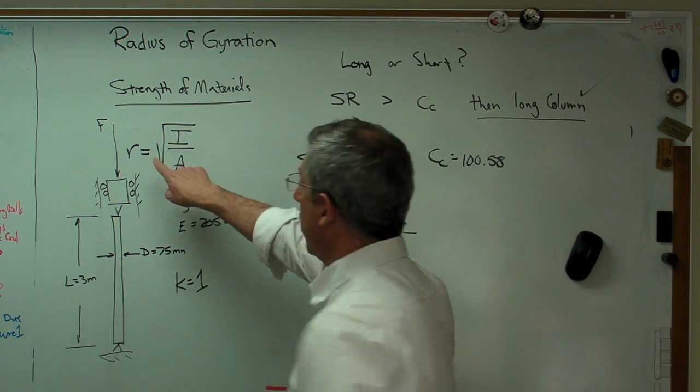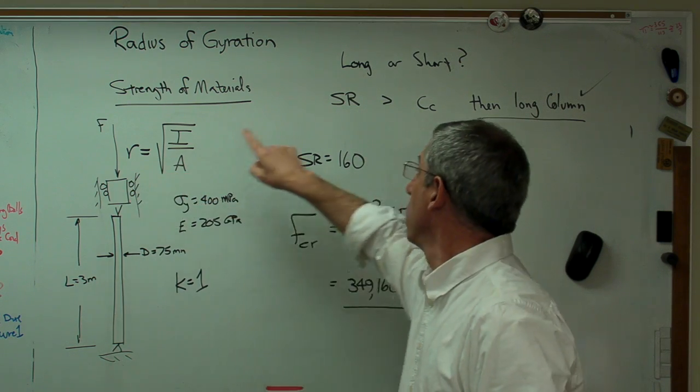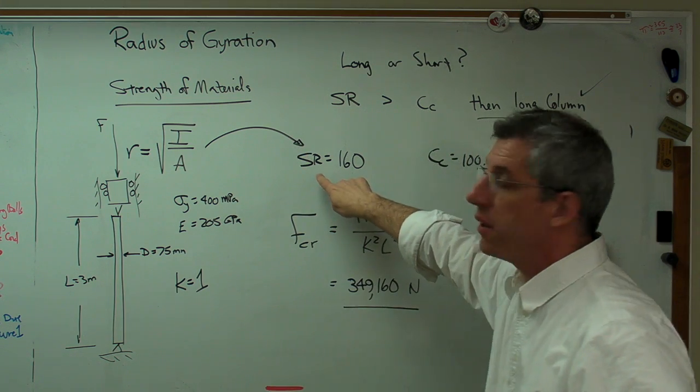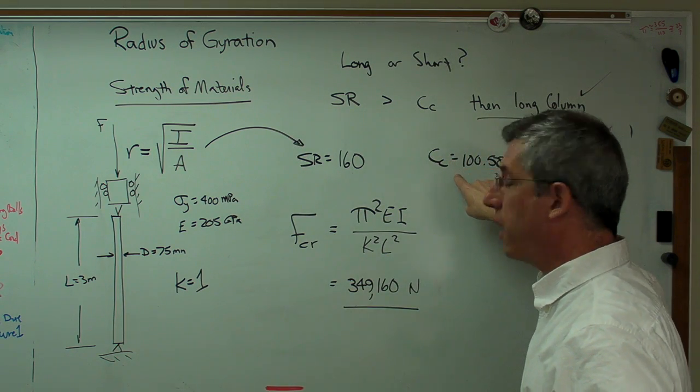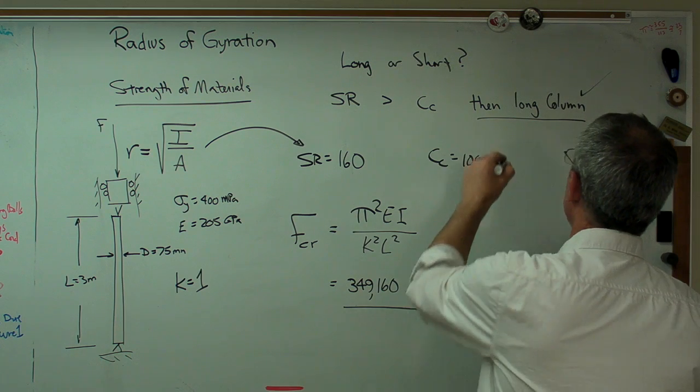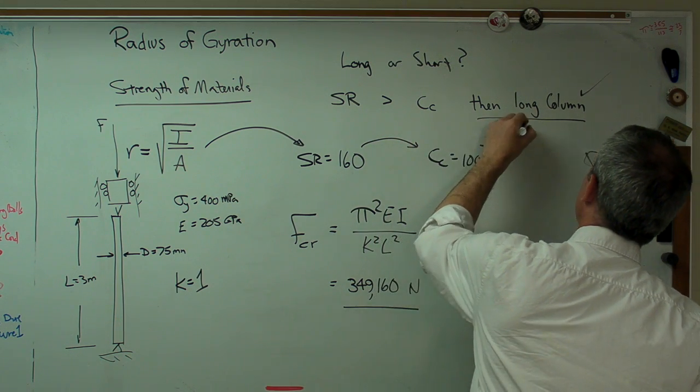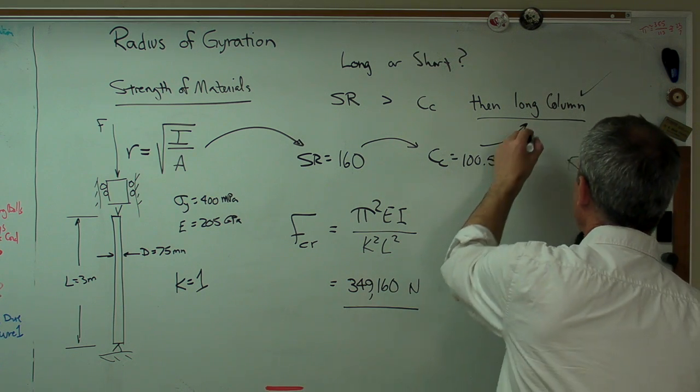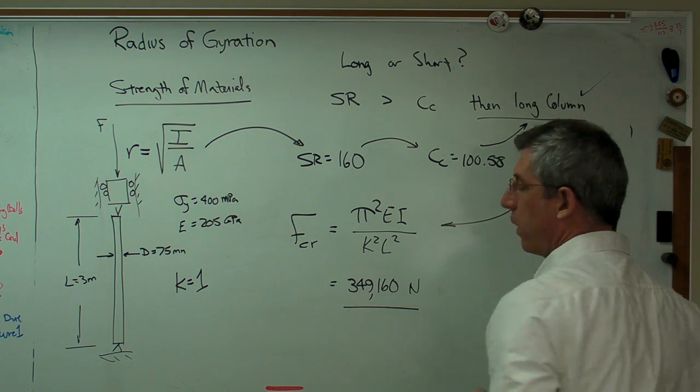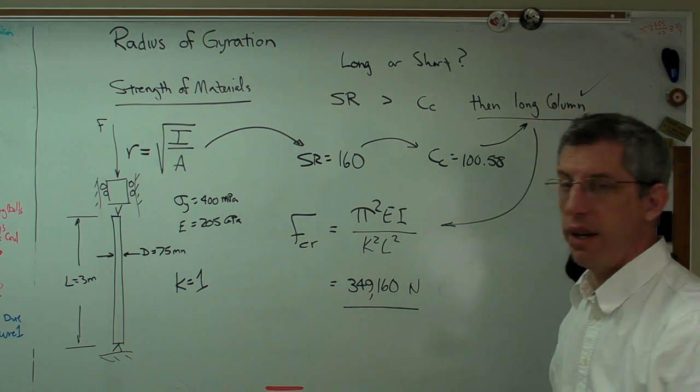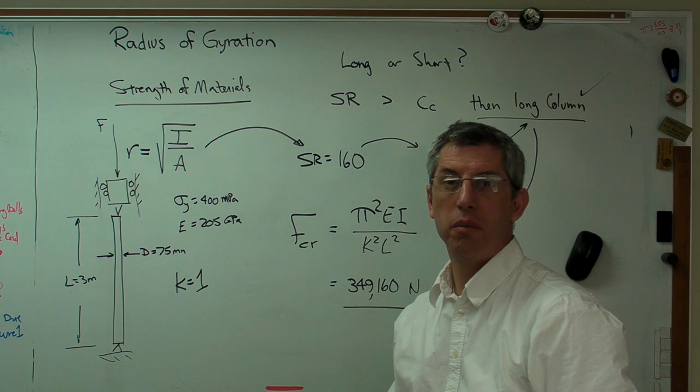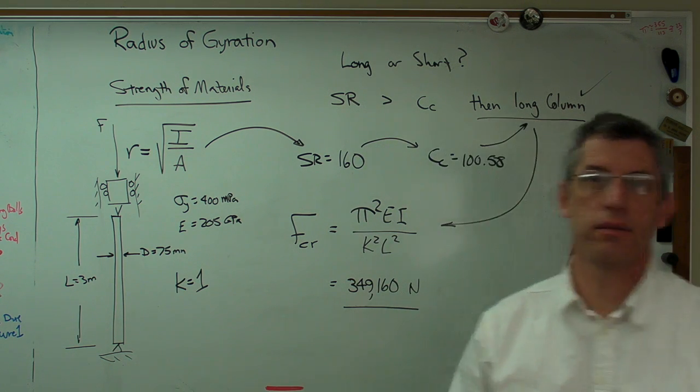Using the radius of gyration, we were able to calculate a slenderness ratio. We compared the slenderness ratio to the column constant to show that we had a long column. Knowing that we have a long column, we were able to use the Euler buckling equation and calculate the buckling load of this long, slender, pin-ended column. Thank you so much.